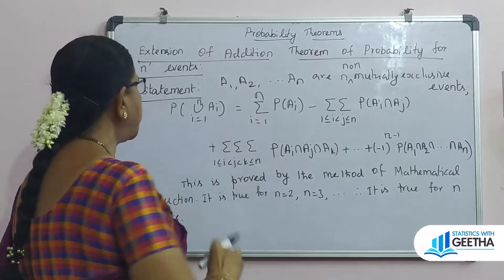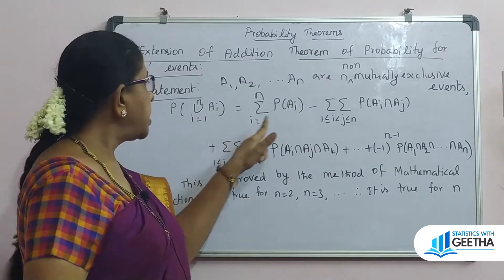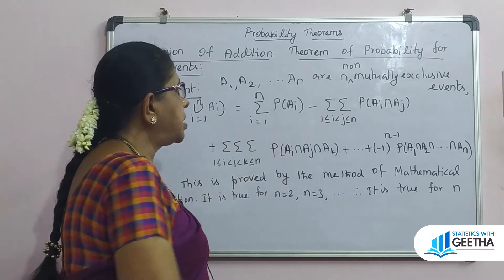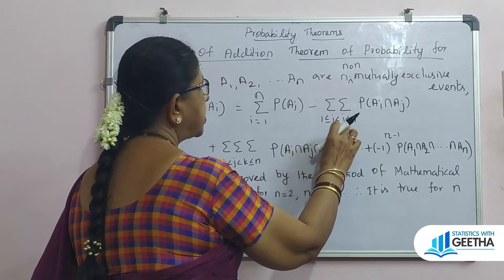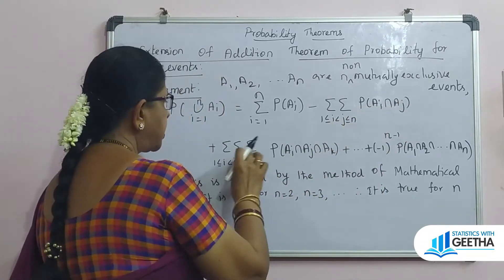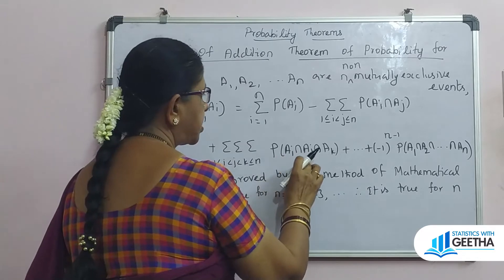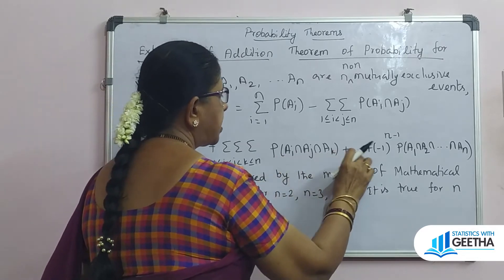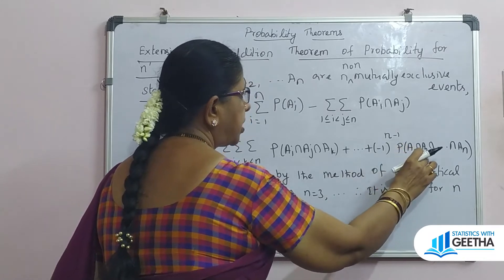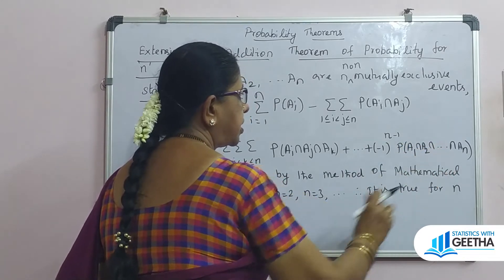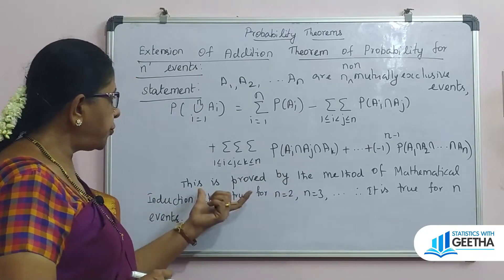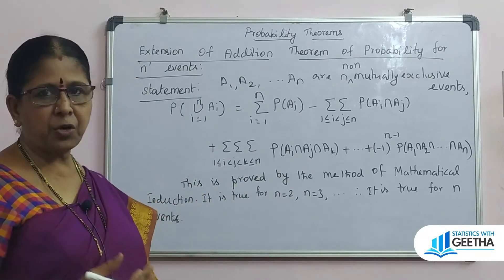The statement: P of union (i from 1 to N) of A_i equals summation from i=1 to N of P(A_i), minus double summation over 1 ≤ i < j ≤ N of P(A_i intersection A_j), plus triple summation of P(A_i intersection A_j intersection A_k), and so on, plus (-1)^(N-1) times P(A_1 intersection A_2 intersection ... intersection A_N). This proof uses mathematical induction.